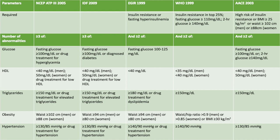The EGIR has a required parameter of insulin resistance or fasting hyperinsulinemia, and two or more of the following: fasting glucose of 100 to 125 mg per deciliter; less than 40 mg per deciliter of HDL; more than 180 mg per deciliter of triglycerides, or drug treatment for dyslipidemia; more than 94 cm waist circumference for men or more than 80 cm for women; and more than 140 over 90 for blood pressure, or drug treatment for hypertension.